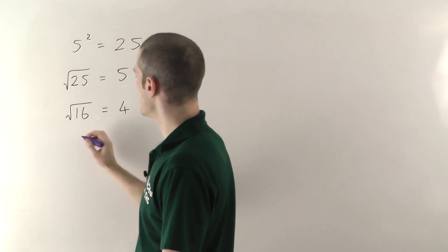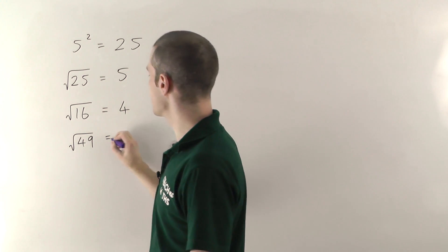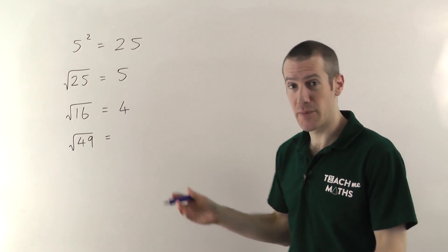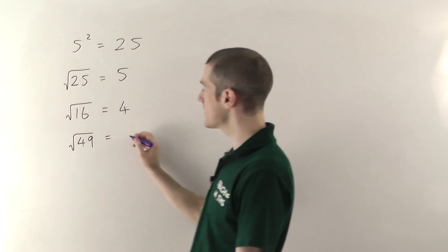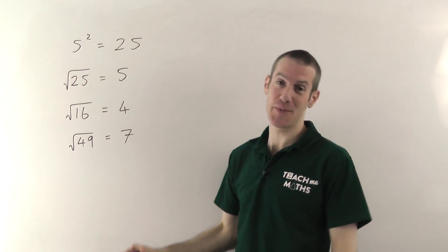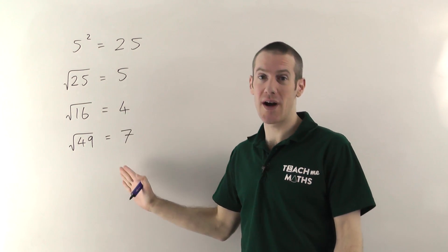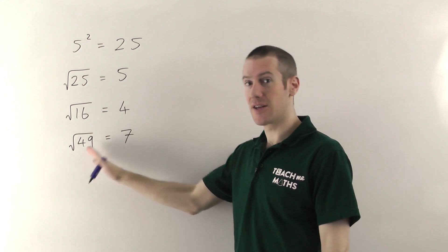Let's just do one more quickly. Let's have the square root of 49. So if you think about your times tables, what number times itself gives you 49? Well it's 7. And that's it really. This is a very simple topic. That's how you work out a square root. You've just got to think about what number squared will give you that thing. You're working backwards.